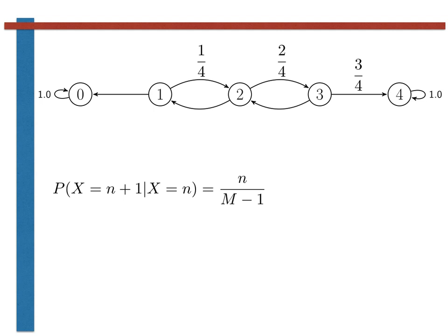Obviously, if the probability of a transition from state n to state n plus 1 is n over m minus 1, and if the transition graph is as shown at the top of this slide, then the probability of a transition from state n to state n minus 1 must be m minus 1 minus n over m minus 1, because each row of our transition matrix must sum to 1.